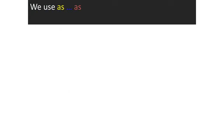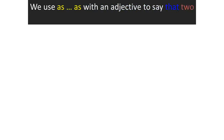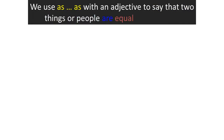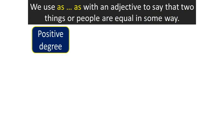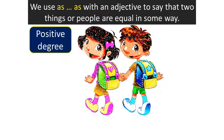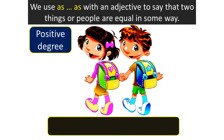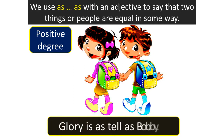We use 'as...as' with an adjective to say that two things or people are equal in some way. This is the positive degree. For example: Glory is as tall as Bobby.